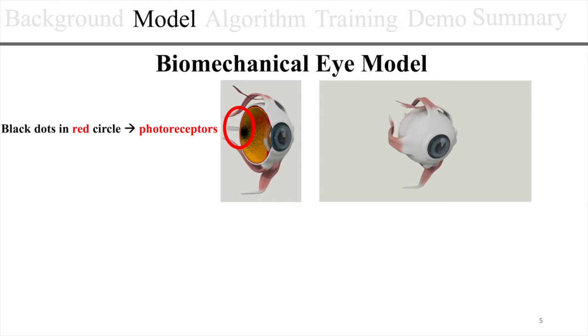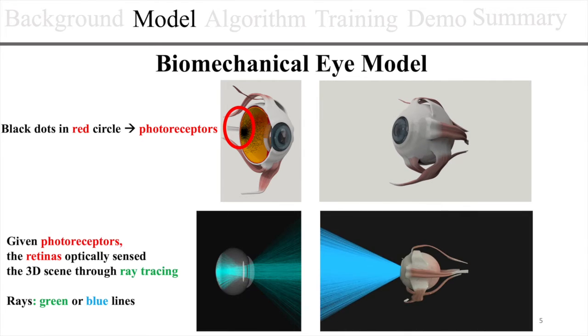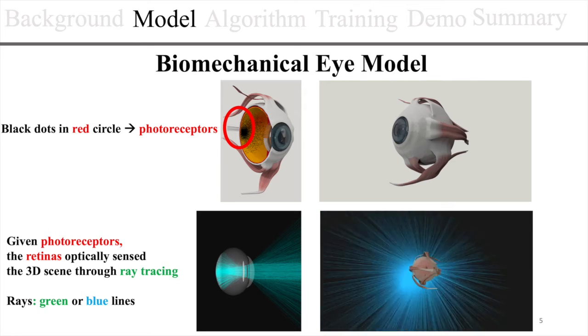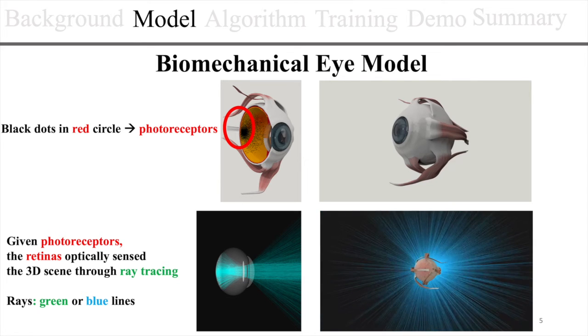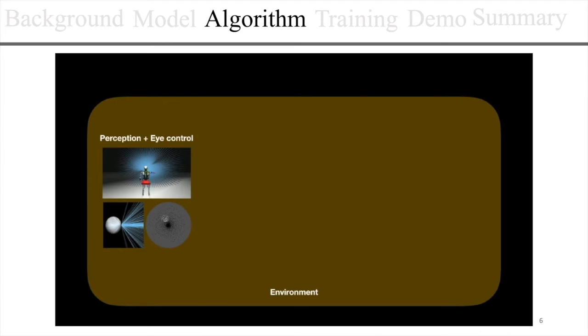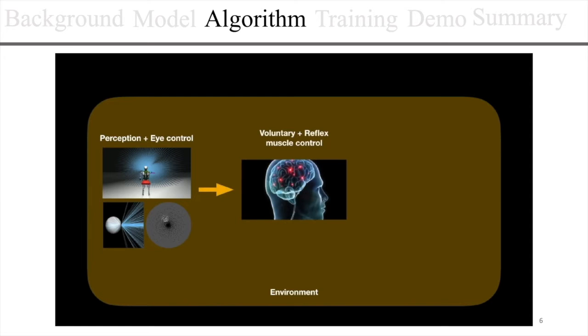Our virtual human also has eyeballs which use photoreceptors as a sensor. Given the photoreceptors, the retina senses the world through ray tracing. The virtual human has biomimetic eyes and active vision system that drive the neuromuscular motor controllers to perform sensory motor tasks.